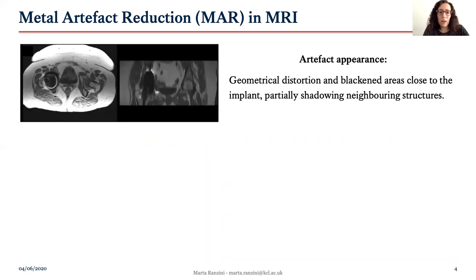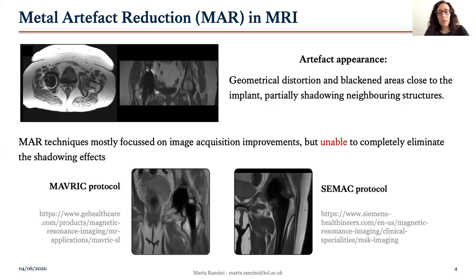On the MR side, very little work has dealt with the management of the metal artifact. The susceptibility variations due to the metal cause geometrical distortions and, in general, a loss of signal within the implanted area, which shadows all the neighboring structures. Most metal artifact reduction techniques have introduced improvements through tailored MR sequences such as MAVRIC or SEMAC, which have proven effective in reducing the extension of the shadowing, but cannot completely eliminate it, and this prevents the visualization of the implant in the MR images.